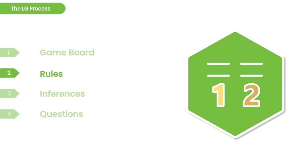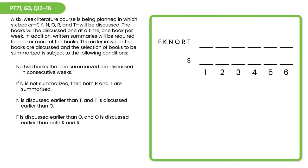After you have a game board set up, turn to the rules. Go slowly here — this is a really common place for people to make mistakes. Hit pause and see if you can diagram the rules with consistent notation next to the game board. The first rule tells us that no two books that are summarized are discussed in consecutive weeks. So in the bottom row, we cannot have two S's consecutively. We put them in an antiblock to remember: no S's consecutively.